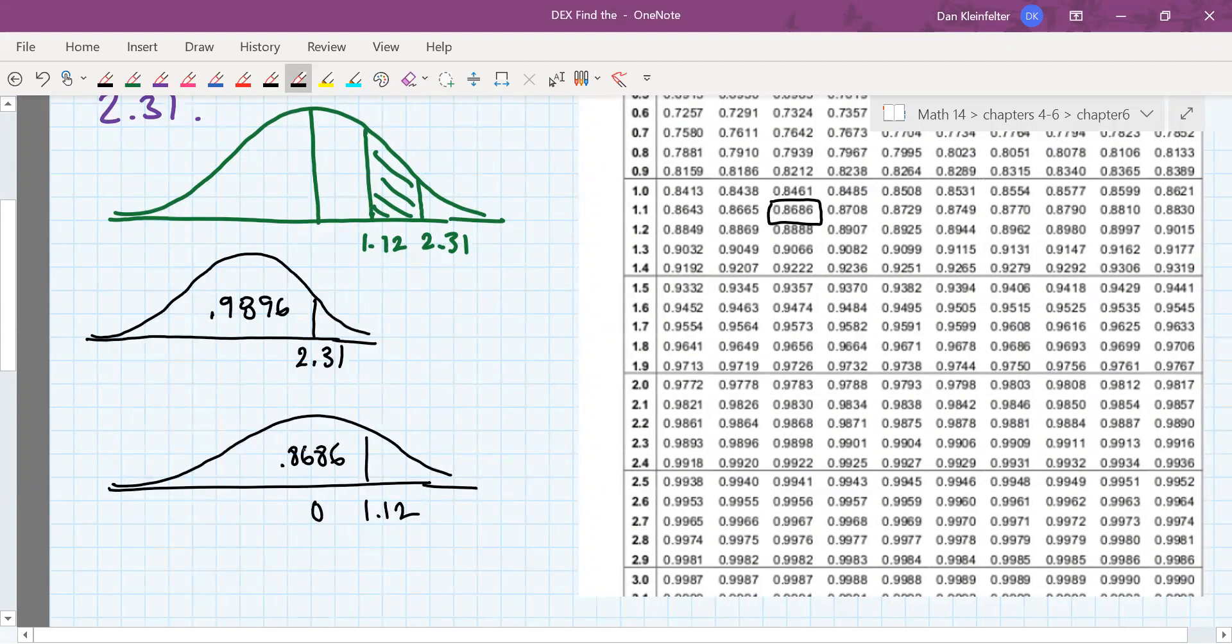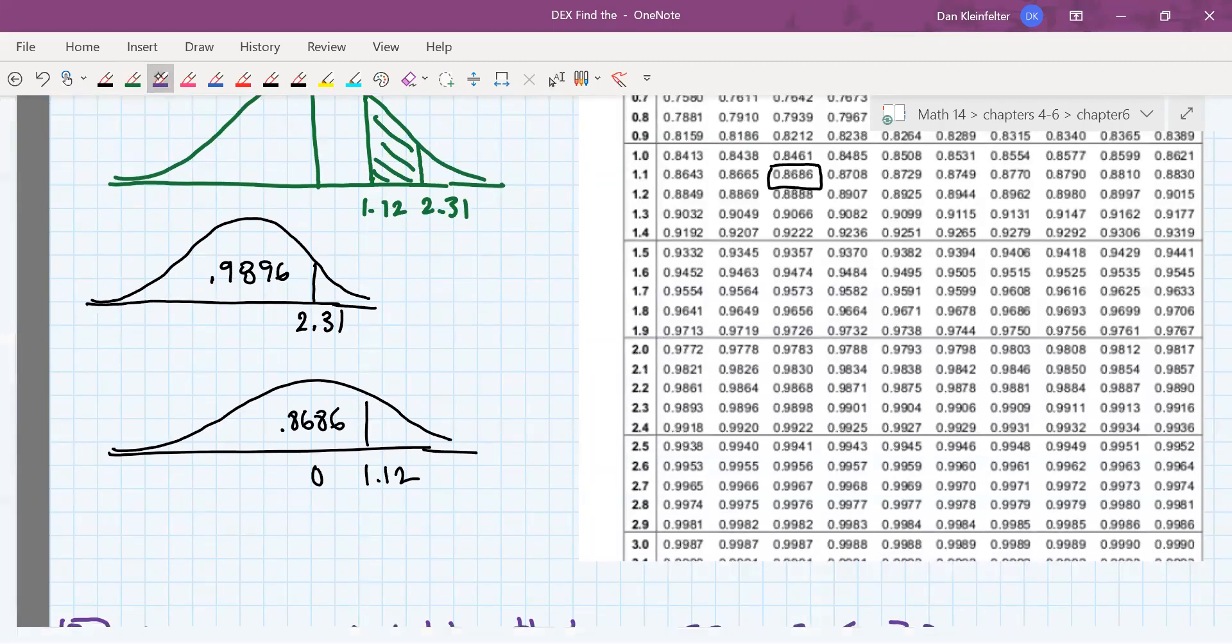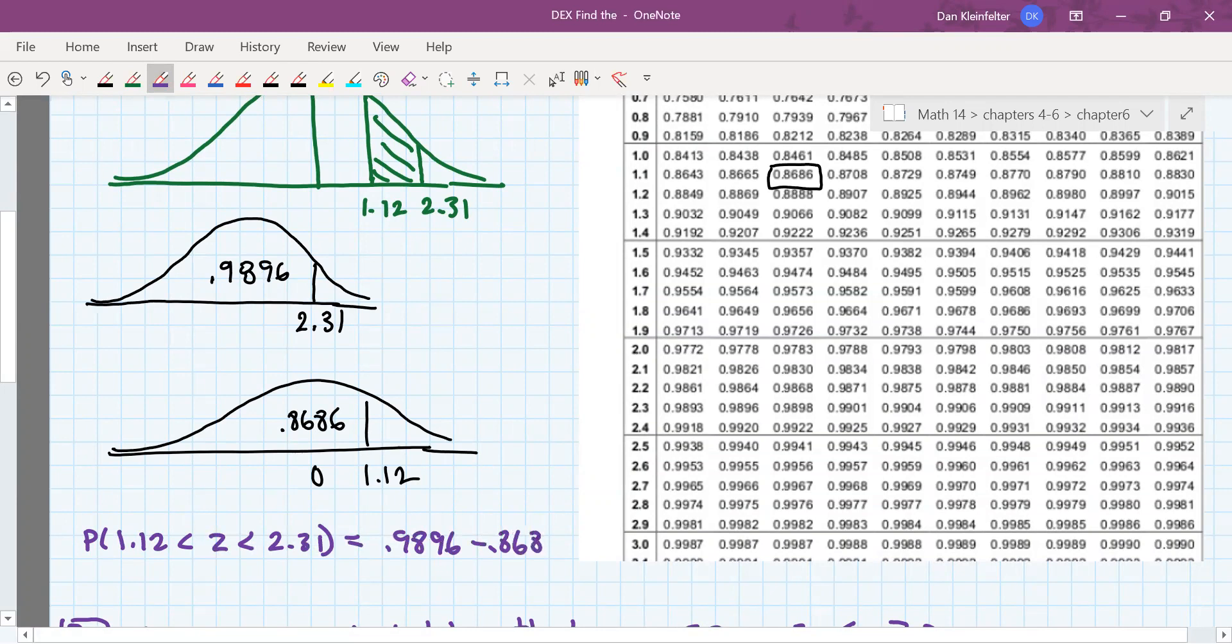Alright, so the area up to 2.31 is 0.9896, up to 1.12 it's 0.8686. So the probability that we want, the probability that z will be between 1.12 and 2.31, will be the difference of these two probabilities: 0.9896 minus 0.8686, and that's about 0.121.